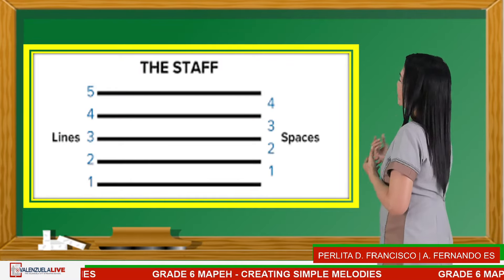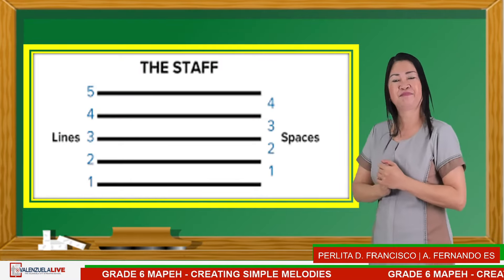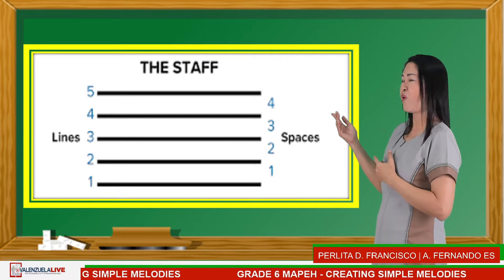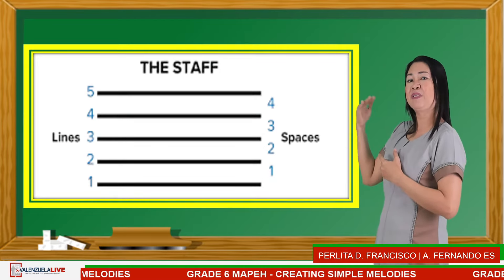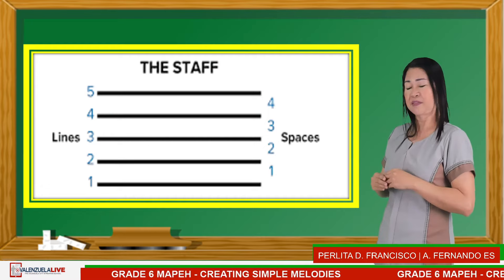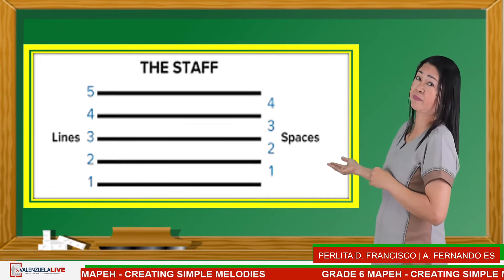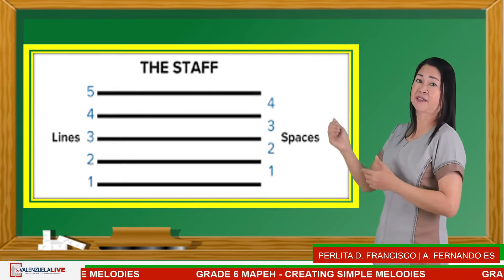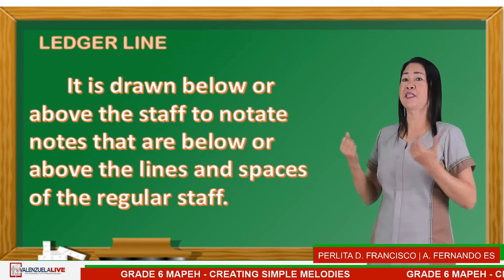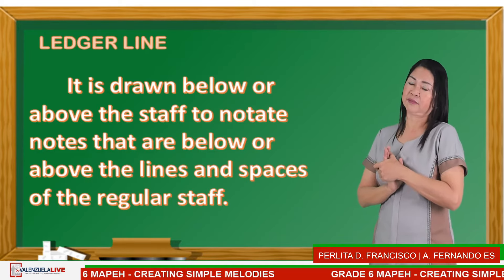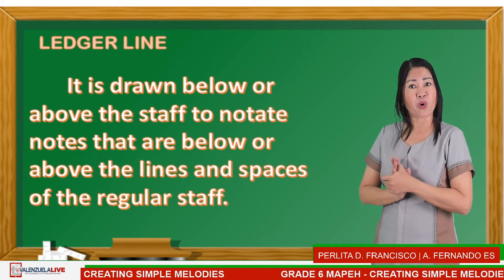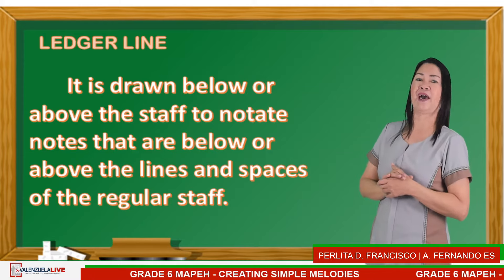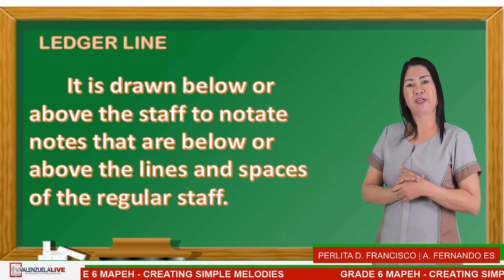This is a musical staff. It has five lines — one, two, three, four, five — and between these lines are four spaces: first space, second space, third space, and fourth space. Next symbol is the ledger line, which is shown below or above the staff to notate notes that are below or above the lines and spaces of the regular staff.